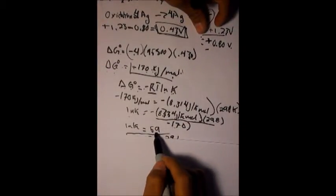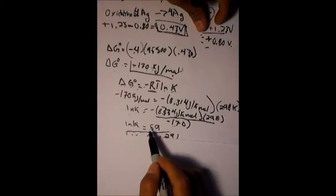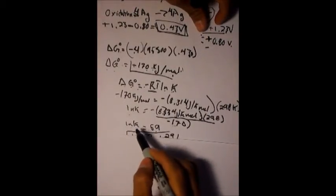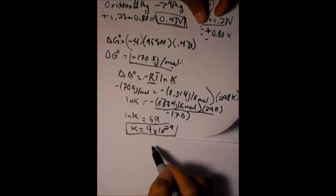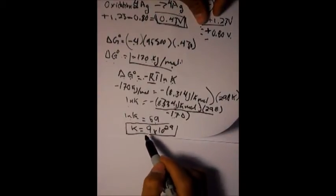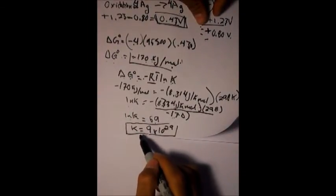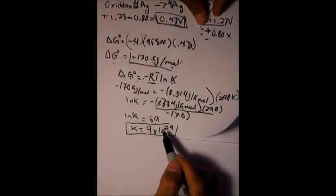This will equal 69, and then from the final part you just take e to the power of 69 on the calculator and it will equal K equals 9 times 10 to the 29.